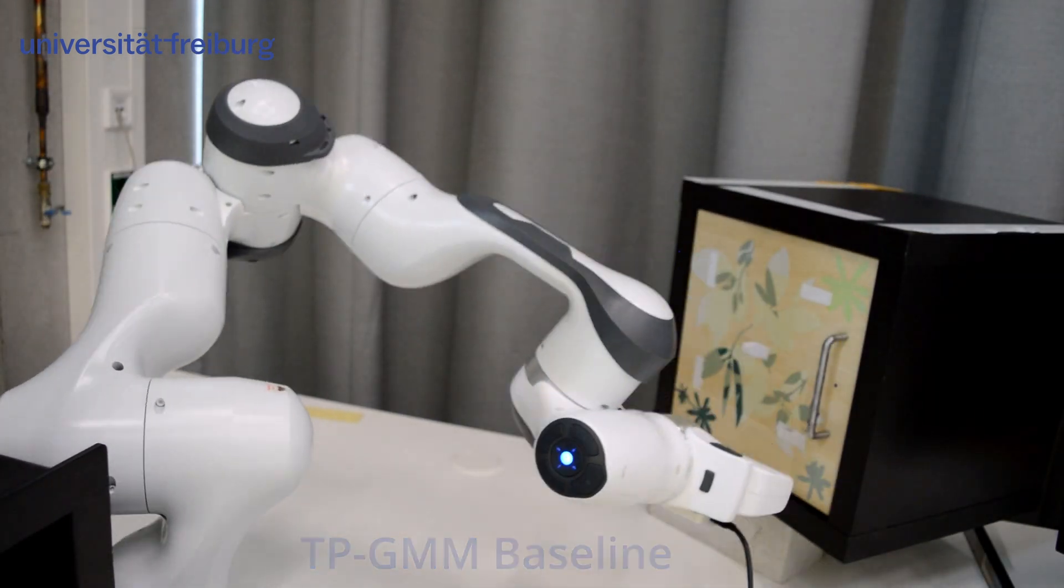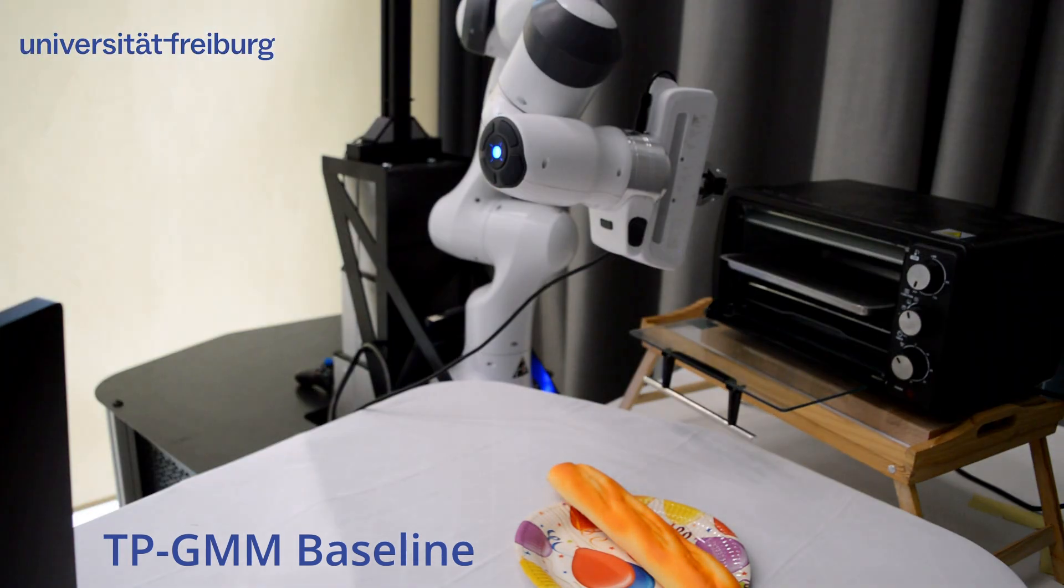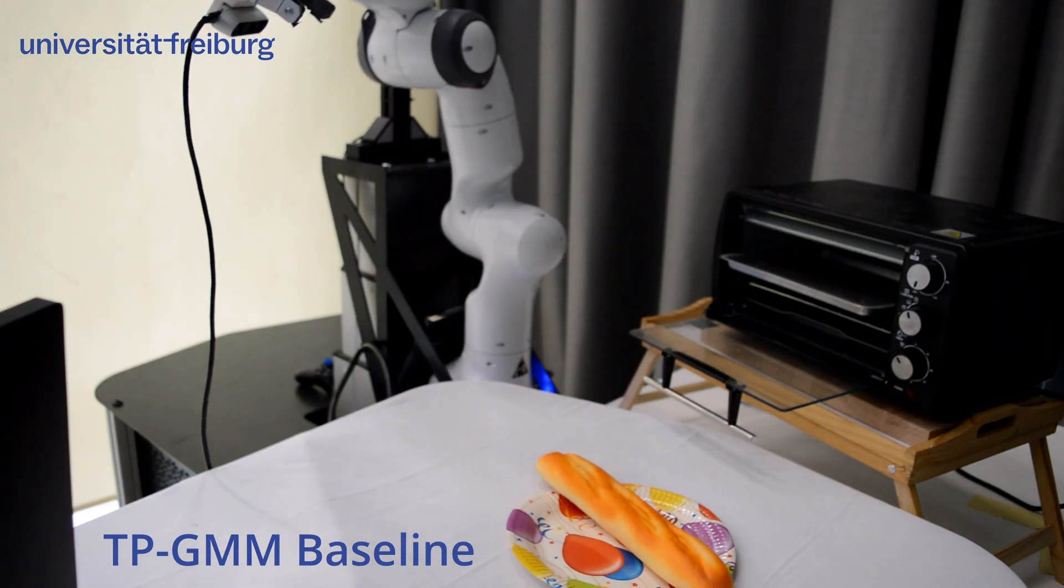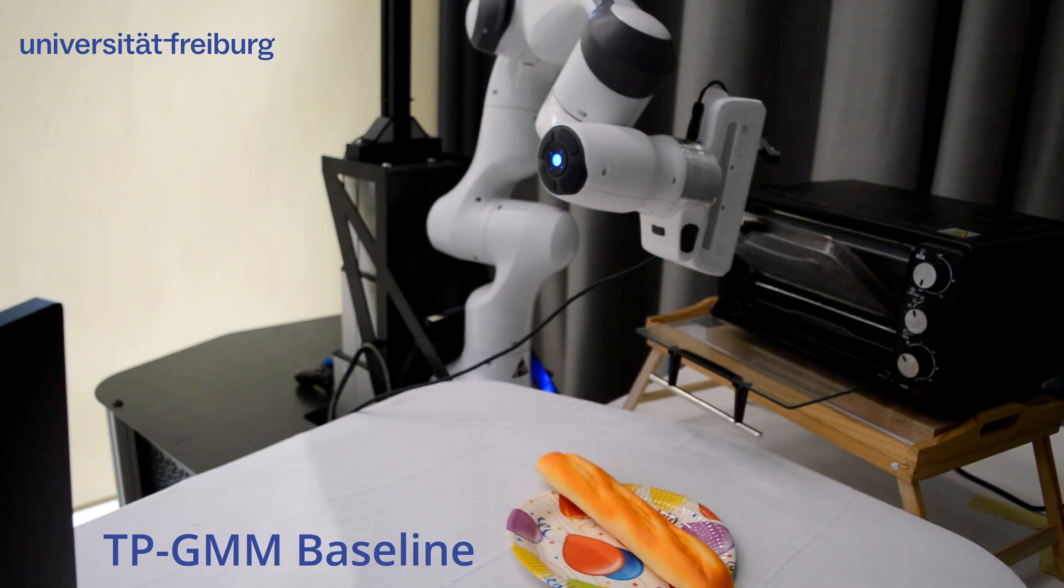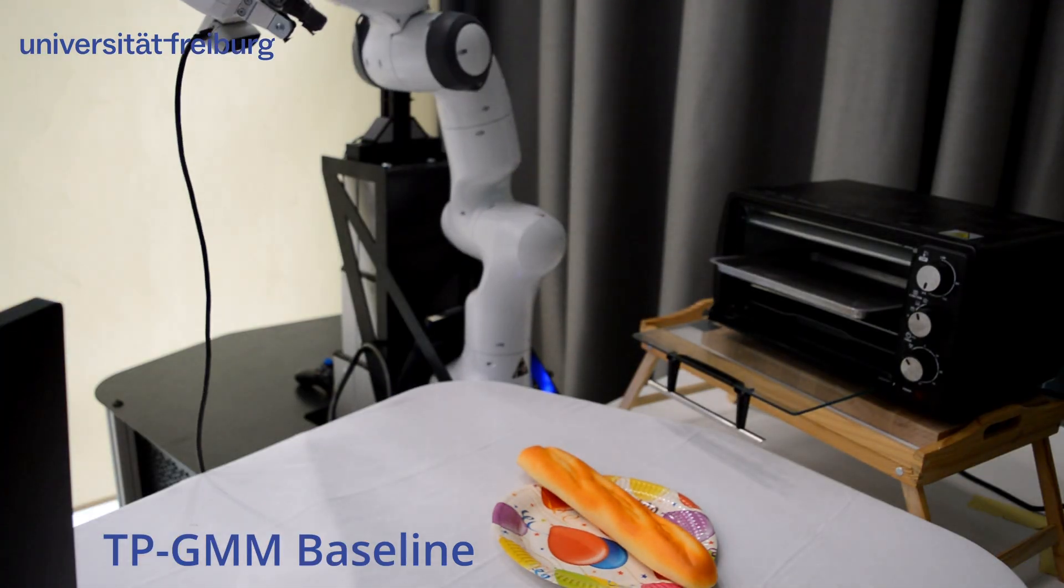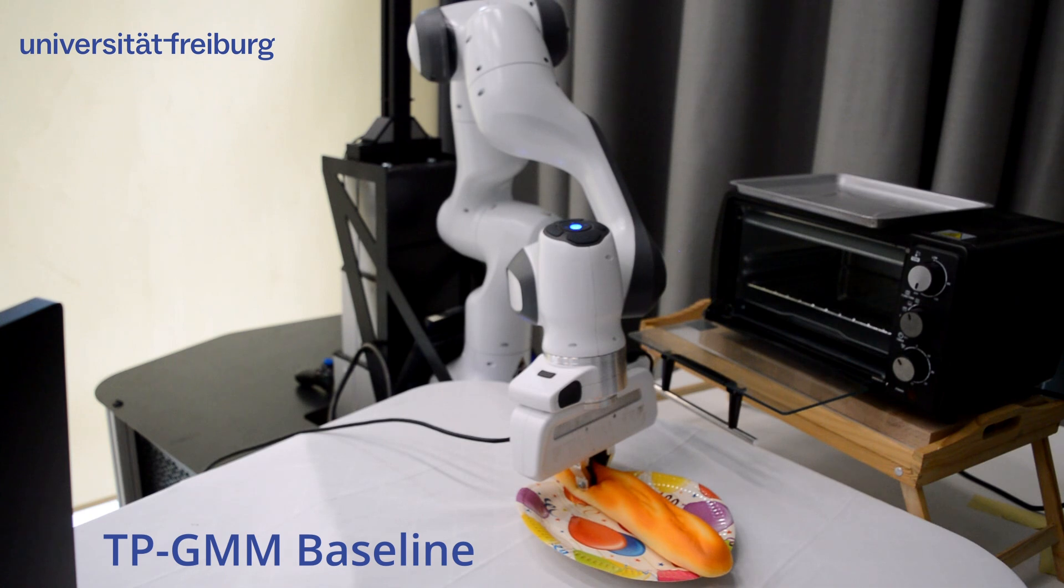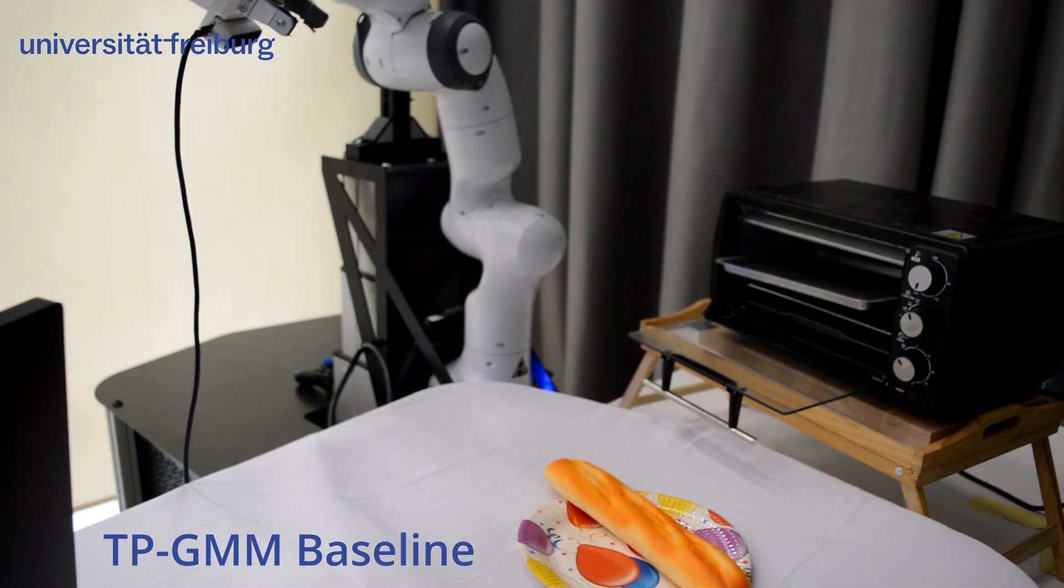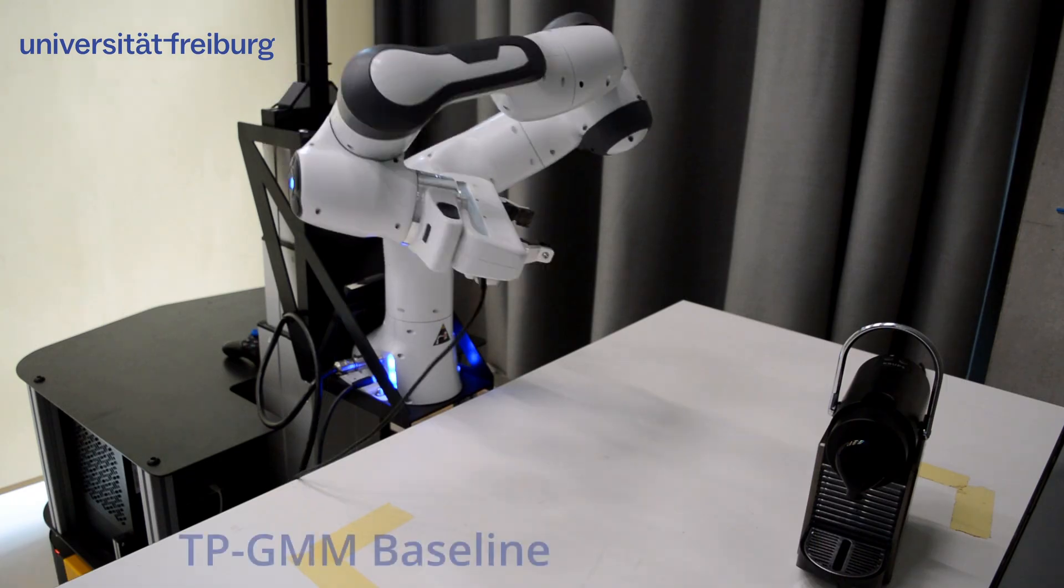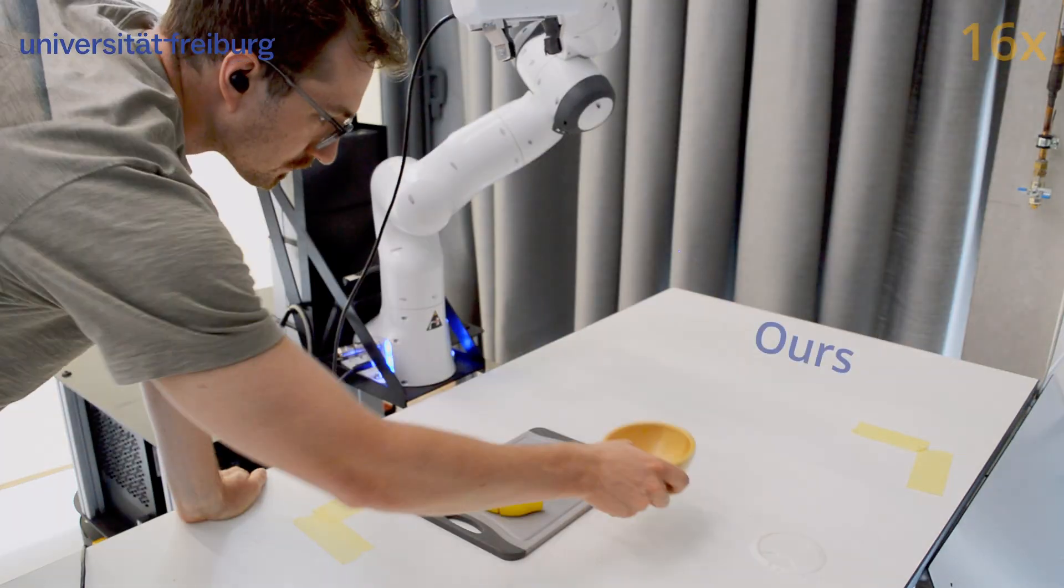You can see TPGMM struggling on all tasks, irrespective of their duration, yet problems aggravate if the task becomes more complex. This is because it does not take into account the temporal alignment of the skills, and because it contaminates all skills by irrelevant task parameters.